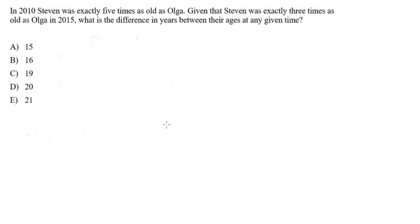This is what I mean by an age ratio question. You will get two individuals or two things at two certain points in time, and at each point in time, their ages will be expressed in a certain ratio. And through that ratio, you will be able to solve for their ages. Now, what's nice about these questions is that they're actually quite quick to solve, and they're also quite easy, as long as you know the method. Let's read the question. In 2010, Stephen was exactly five times as old as Olga. Given that Stephen was exactly three times as old as Olga in 2015, what is the difference in years between their ages at any given time?